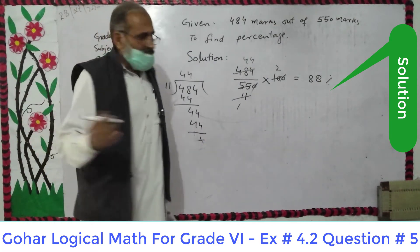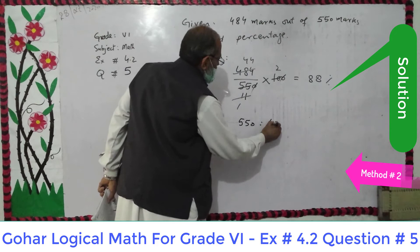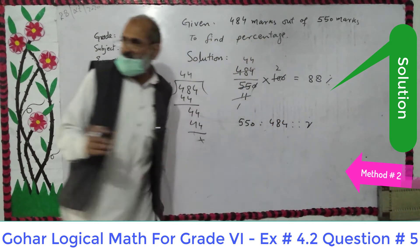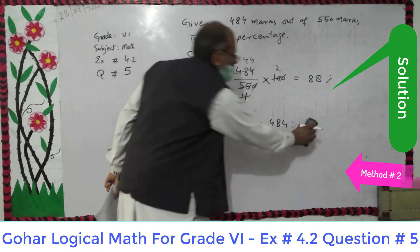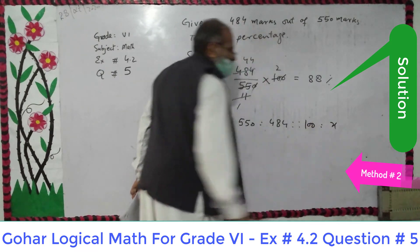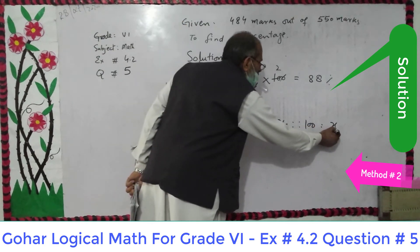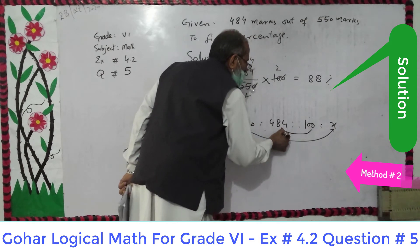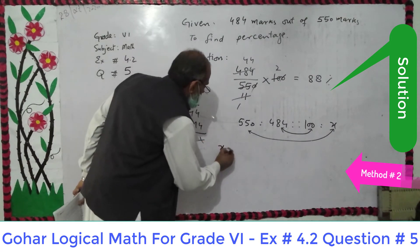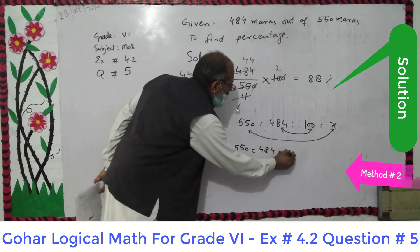The other method is ratio and proportion. For example, out of 550 she got 484. We have to find out of 100 — because percentage means per 100 — she got X marks. We multiply the extremes and multiply the means: X multiplied by 550 equals 484 multiplied by 100.